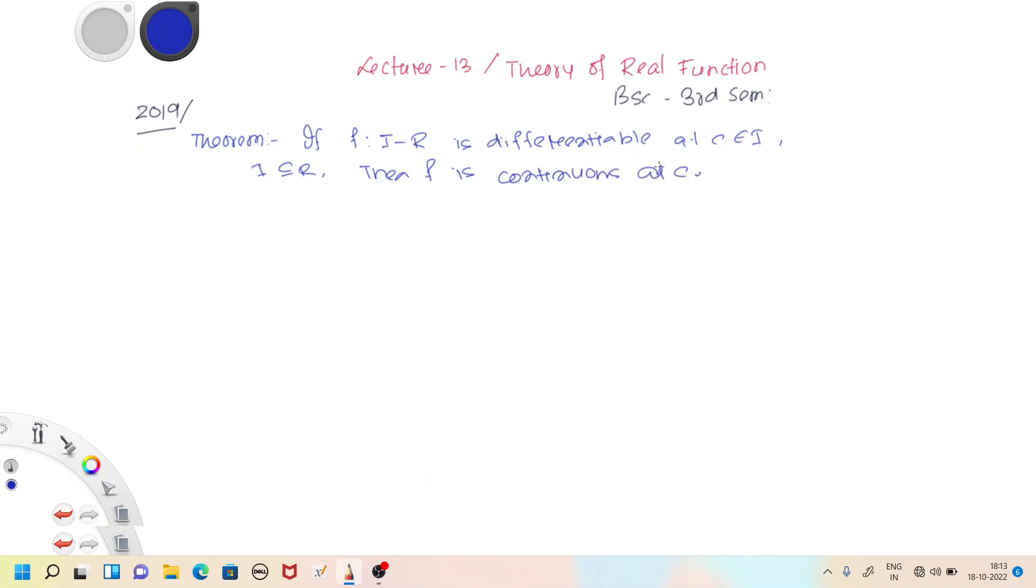The function f from I to R is differentiable at any arbitrary point c of an interval, that is c belongs to I, then the function is continuous at the point c. Let's prove this.